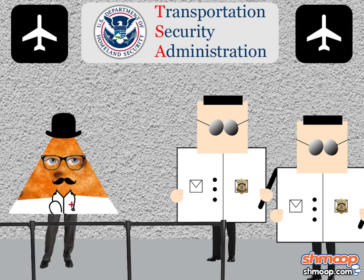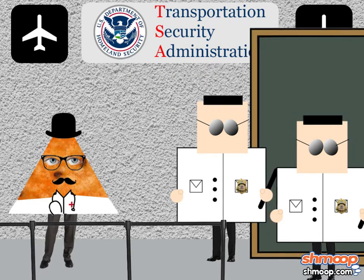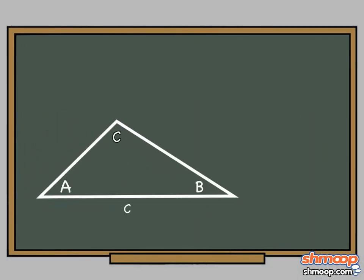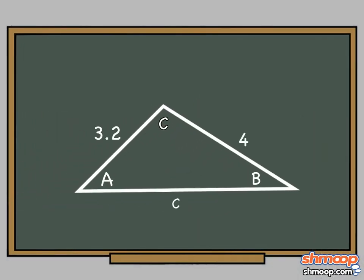They want to figure out all his side lengths and angles before letting him through. Dr. Dorito tells security that two of his lengths are 3.2 and 4, and that his angle A is 60 degrees. Given an angle side-side.